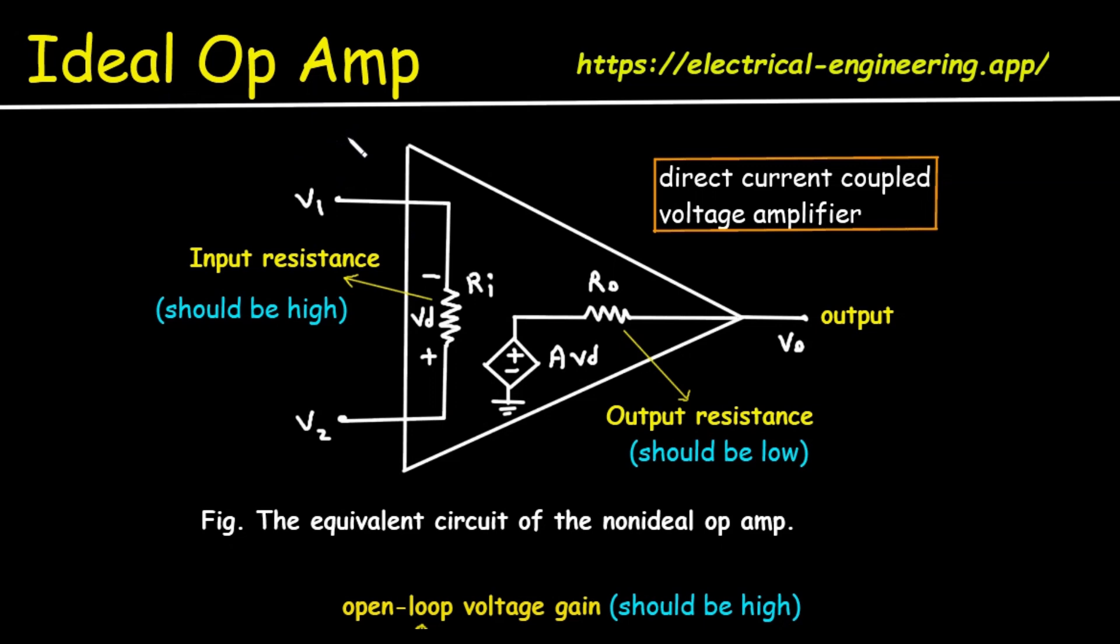At its core, an Op Amp is a high gain direct current coupled voltage amplifier. It has two inputs—an inverting and non-inverting—and one output. Its job is to amplify the voltage difference between its two terminals, V1 and V2.